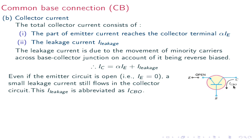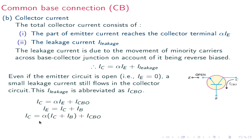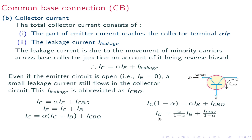Icbo means collector-base current with emitter open. Therefore, Ic equals alpha Ie plus Icbo. Since Ie equals Ic plus Ib, substituting gives: Ic equals alpha(Ic + Ib) plus Icbo, which simplifies to Ic equals Icbo divided by (1 minus alpha). This is the expression for the total collector current in the common base configuration.